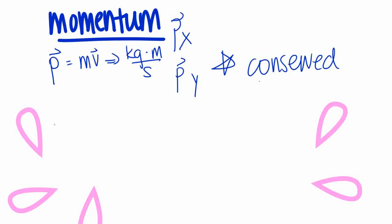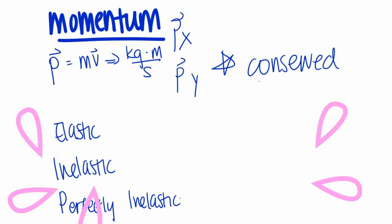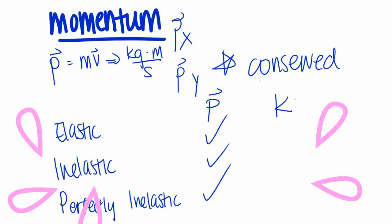So we have elastic collisions, we have inelastic collisions, and then we have perfectly inelastic. Alright, so let's talk about elastic collisions. In the case that it's talking about momentum, momentum will be conserved in here. It is also conserved in inelastic collisions and perfectly inelastic collisions. But when we're talking about kinetic energy, elastic collisions is the only one that conserves kinetic energy. Inelastic and perfectly inelastic does not conserve kinetic energy.